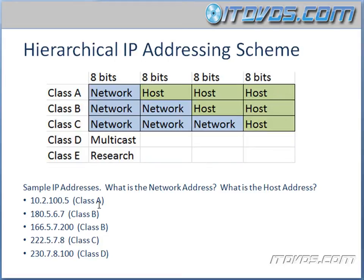This may be a little confusing right now, but the things to take away are the Class A, B, C, D, and E IP address ranges. Also, for each class — A, B, and C — which part of the address is the network address and which part is the host address. That's what we want to take away from this. Then when we get into subnetting, it's all going to become clear.